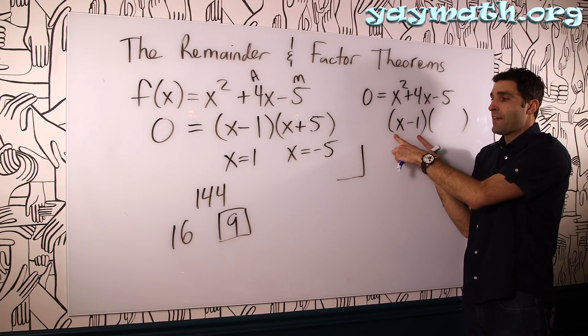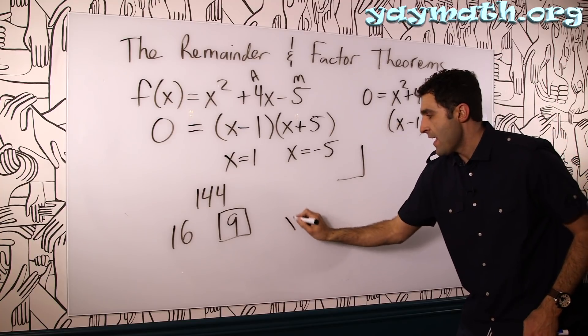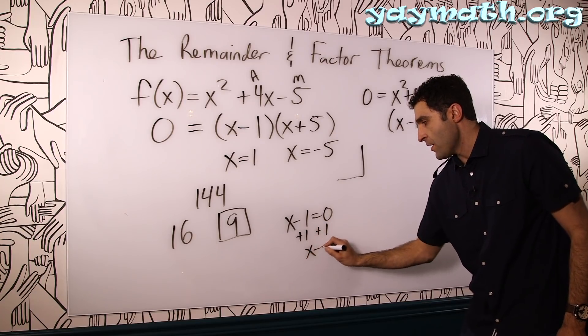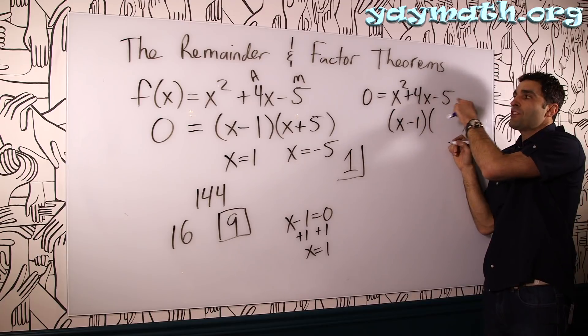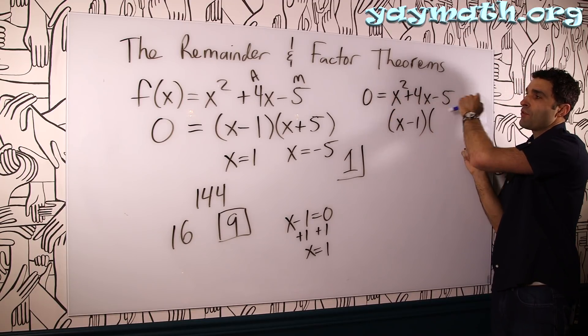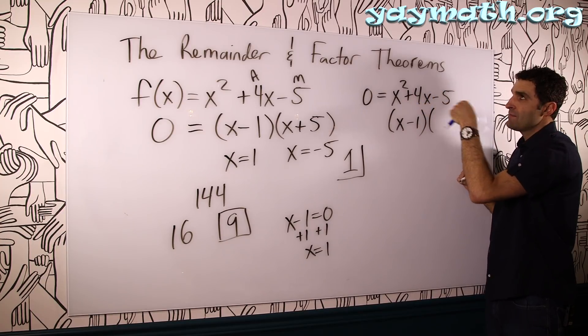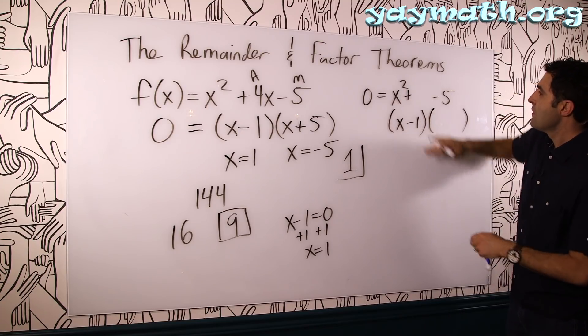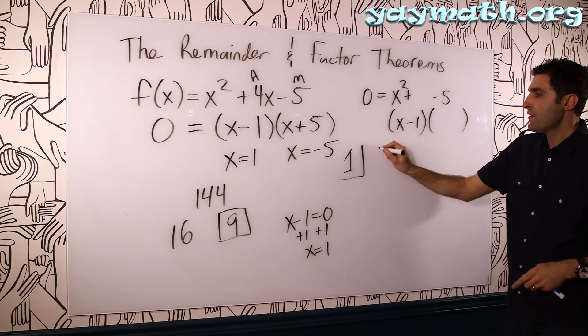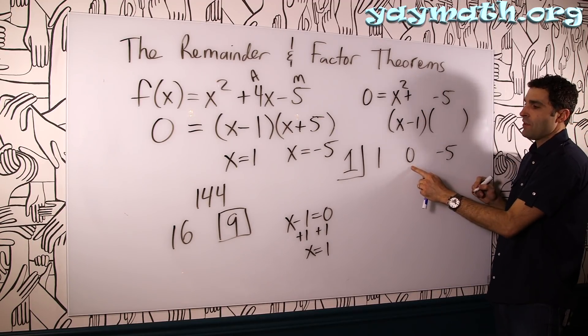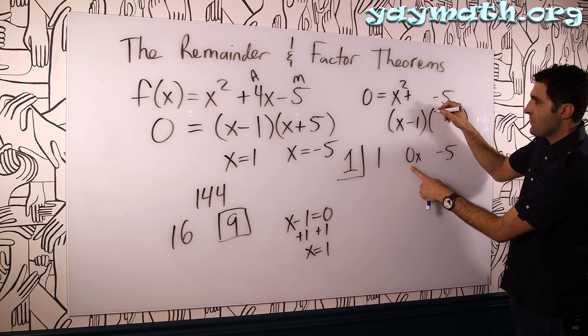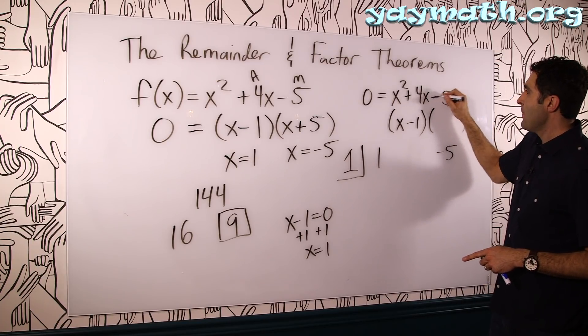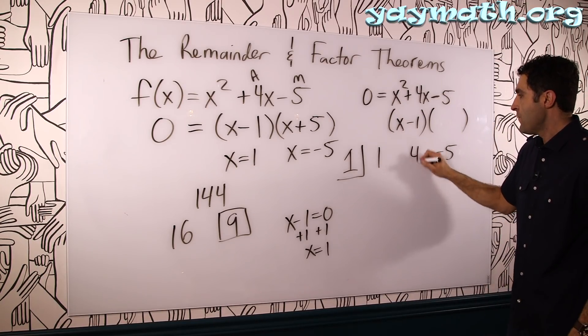Synthetic division basically goes like this. We put the solution of this factor in the box. That is, if we set x minus 1 equals 0, the solution, just like we have here, plus 1 on both sides, x equals 1. So that 1 goes in the box. And then we put the coefficients, the numbers in front of the variables, in order here, trying to keep track of if there's any zeros for x. Like if it was x squared minus 5, we would have to do 1, 0, negative 5. Zero placeholders, they're called. That would be in place of the x if there's no x here. But for the time being, we have no skips. x squared. Then we have 4x. Then we have minus 5. So we put the coefficients down. 1, 4, and negative 5.